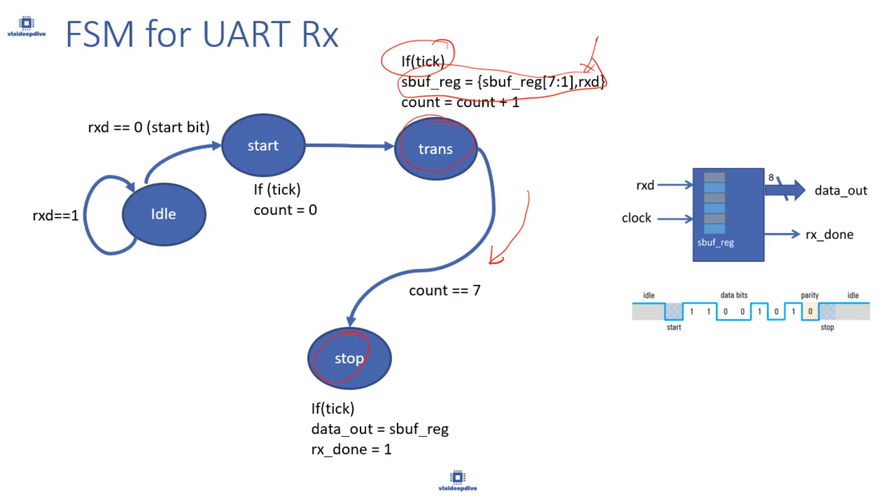Then we will go to the stop bit. If tick is equal to 1, we will send out this data to output and say rx is done, receive is done. So we have received all 8 bits of data. Once we receive all bits of data, we will go back to the idle state and keep looking for change in RXD to indicate a new data start, that new data has been transmitted.